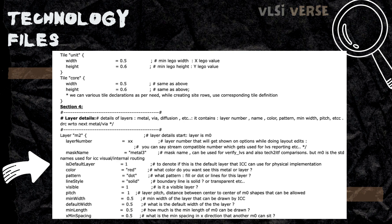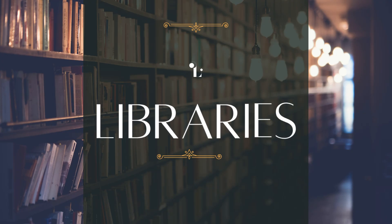The technology file contains the process node and technology node information, unit information, metal layer information including thickness, color, visibility, and width of the metal layers used. It also contains via information, site arrays, site rows, and tie cells.